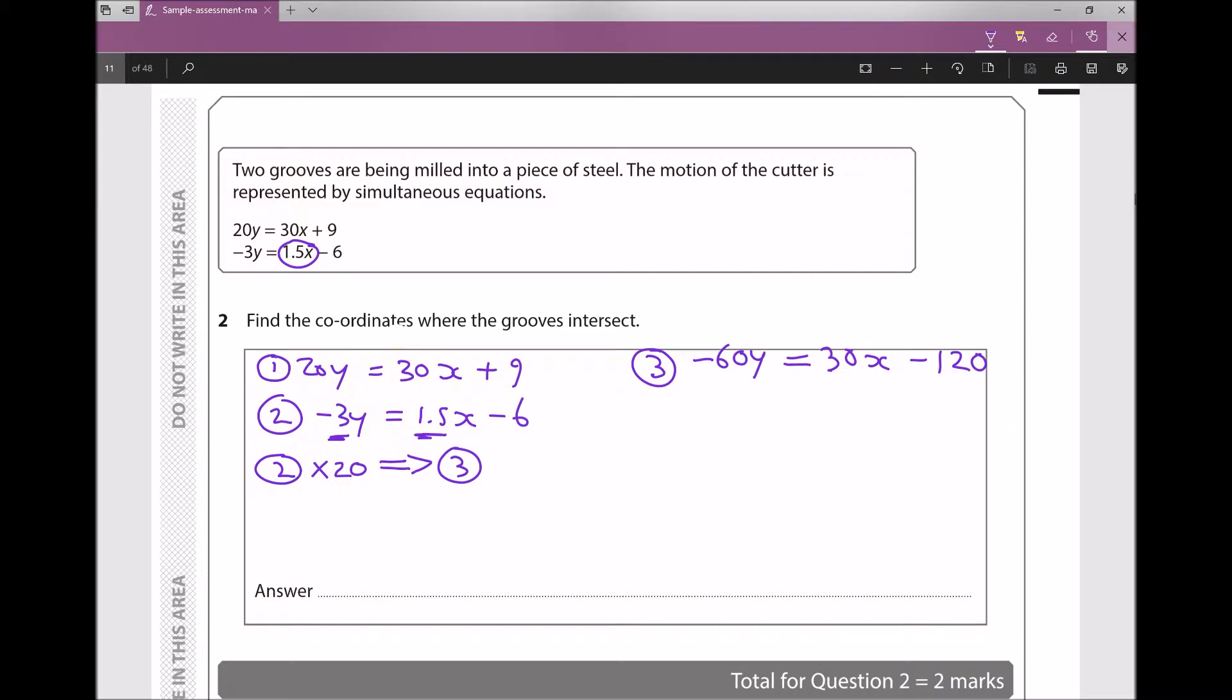So that's my equation three. And underneath it, I'm going to rewrite my equation one because my equation one is remaining the same: 20y = 30x + 9. So I have options here.